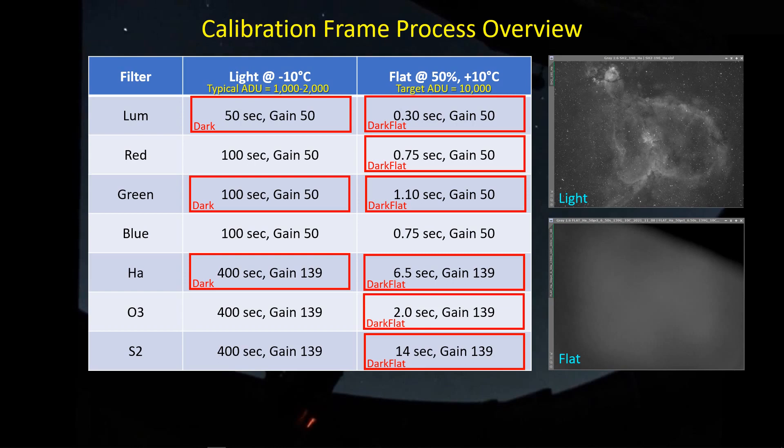But that also means that when I take dark flats, I need a dark flat associated with each one of these. So a dark flat at 0.3 seconds, gain of 50, and with the sensor cooled down to plus 10, and same goes for the others.